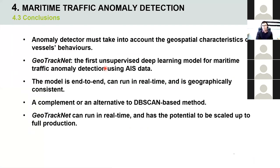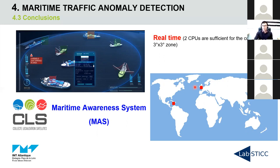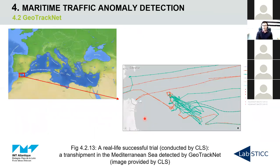So GeoTrackNet is an application of variational deep learning for maritime traffic surveillance. In conclusion, we have proposed the first unsupervised deep learning model for maritime traffic anomaly detection using AIS data called GeoTrackNet. The model can run in real time and has the potential to be scaled up to full production. GeoTrackNet has been tested with CLS's cutting-edge big data platform for maritime awareness. We can apply GeoTrackNet on different zones with very little change in configuration. CLS has also conducted trials themselves.